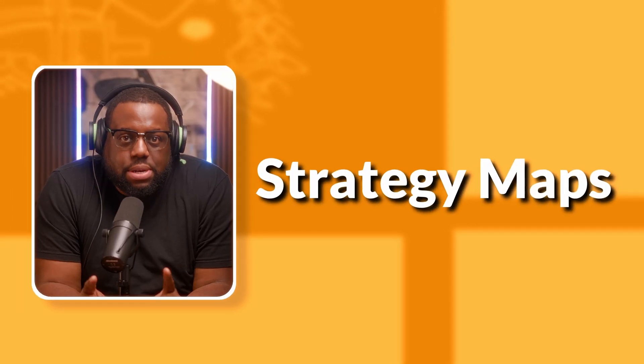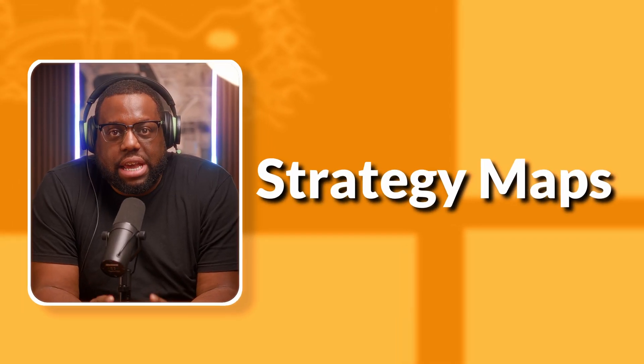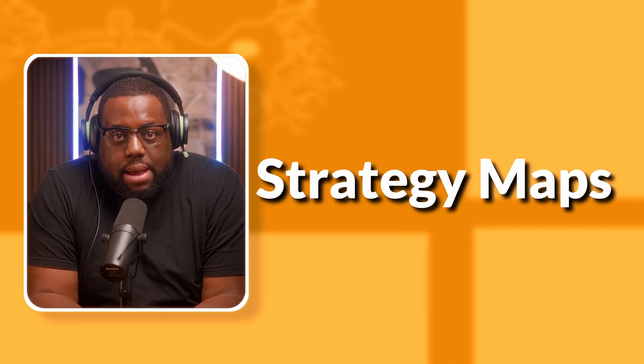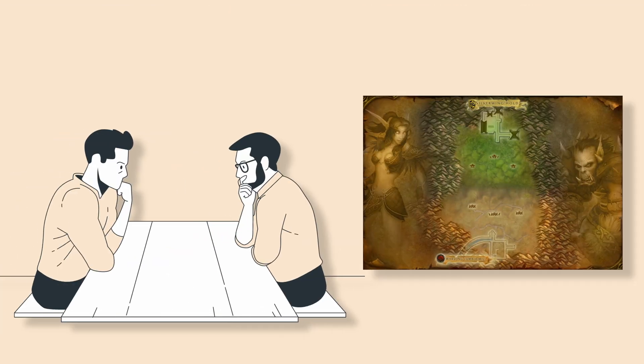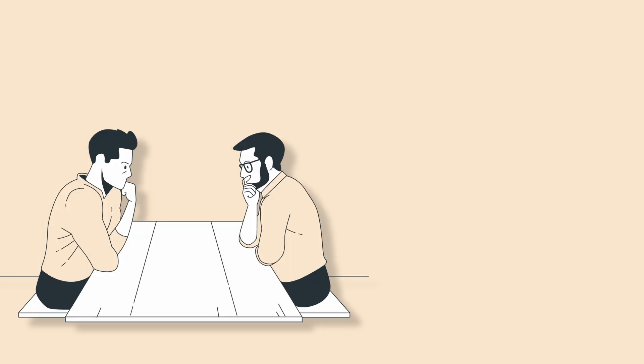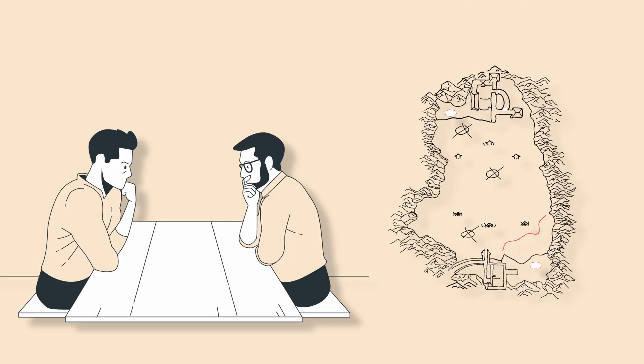Number three is team collaboration and strategy maps. In the world of online gaming, teamwork is everything. The more in tune you and your party are, the better the chances of a coordinated effort resulting in success. Coordinate ability cooldowns, discuss map rotations, and make adjustments as a team.